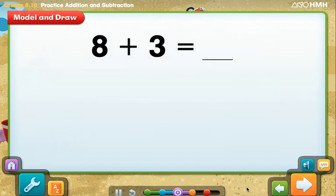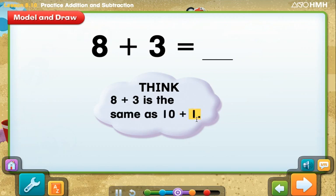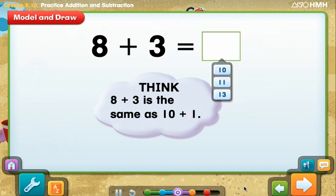Think about different ways you can add and subtract. Let's start with 8 plus 3. One way to solve this is to make a ten. Think, 8 plus 3 is the same as 10 plus what number? 8 and 2 more make 10. So break apart 3 into 2 and what number? 1. 8 plus 3 is the same as 10 plus 1. So what is 8 plus 3? Good job! 8 plus 3 equals 11.